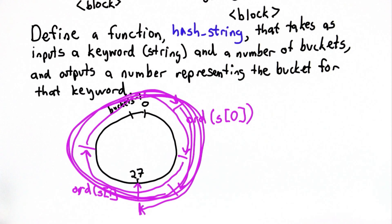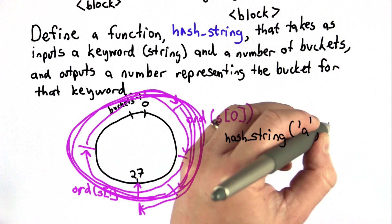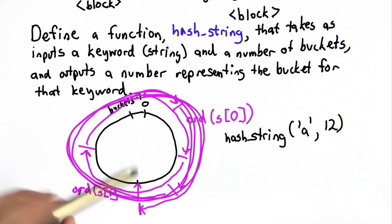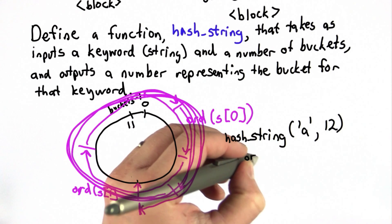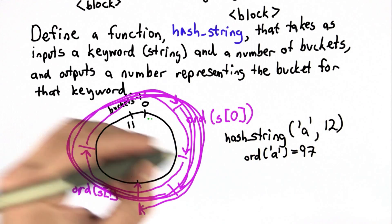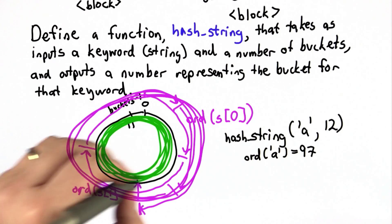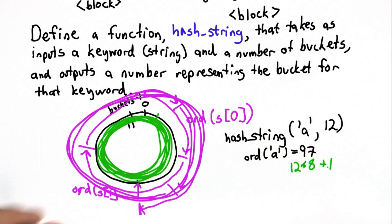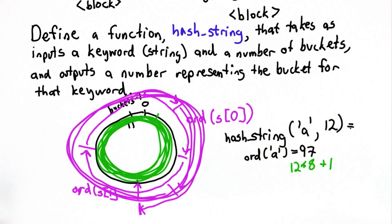I'll give you a couple of examples so you know if you're implementing it the right way. Let's suppose we have as our string the single letter A, and we have 12 buckets. Well in that case we're going to have 12 buckets, so we wouldn't have 27 here. This is going to be 11 is the last bucket. The ord value of A is 97, so for A what we would do is go around the circle 8 times, because 97 is 12 times 8 plus 1. The hash value for A should end up in bucket 1.